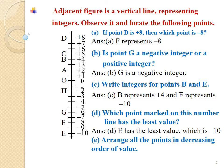So now let us arrange all the points in decreasing order, that is from bigger to smaller. Arranging the points in decreasing order, we get: D, C, B, A, O, H, G, F, and E.